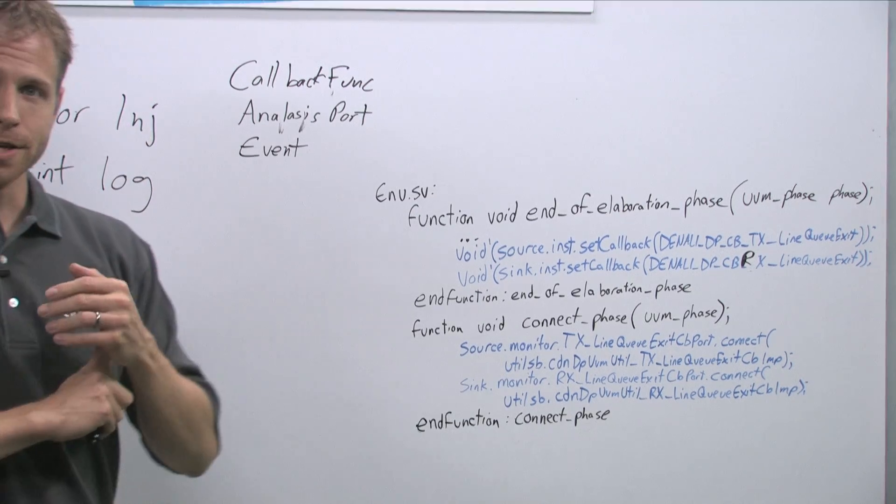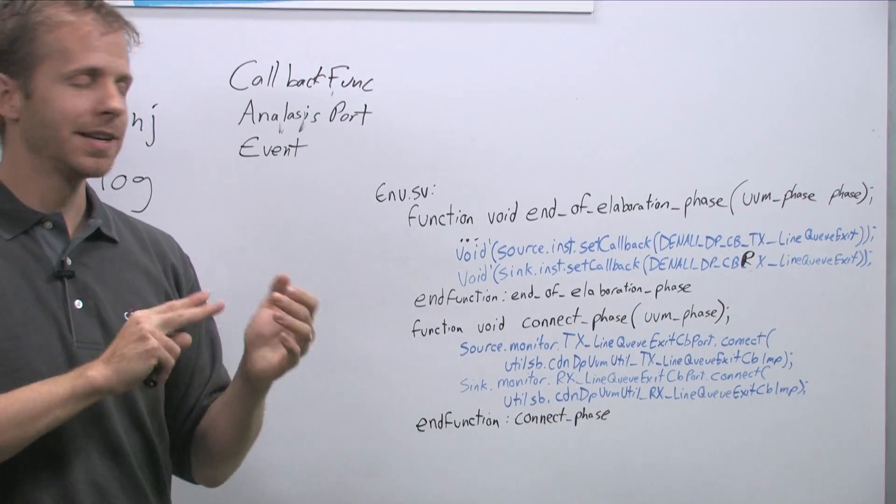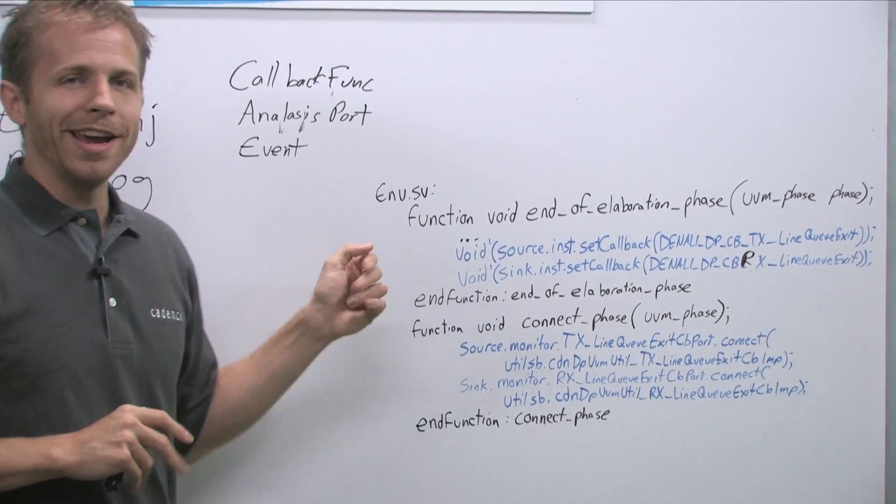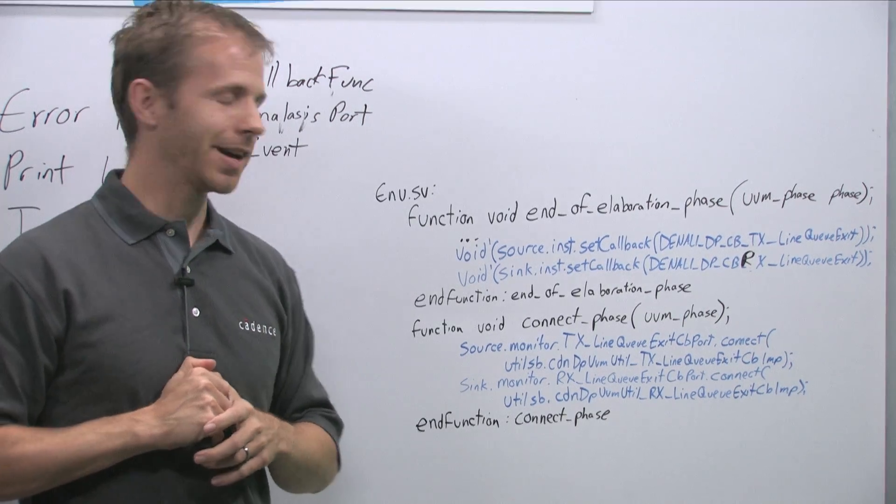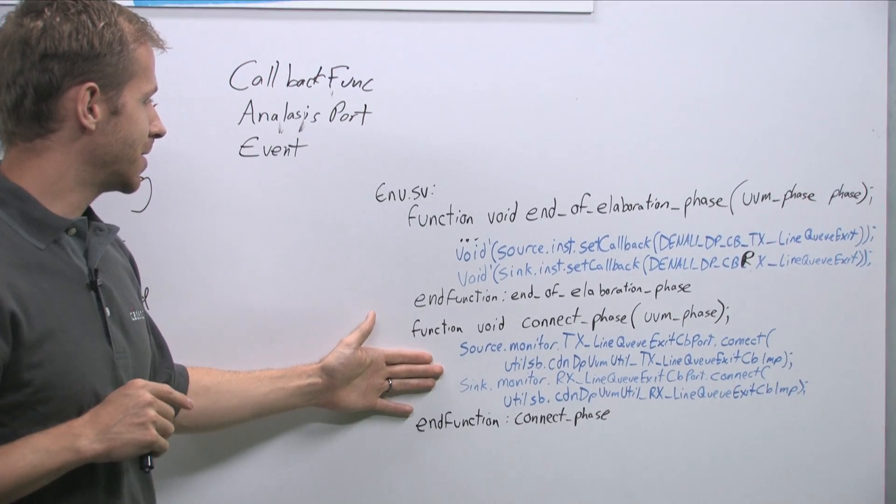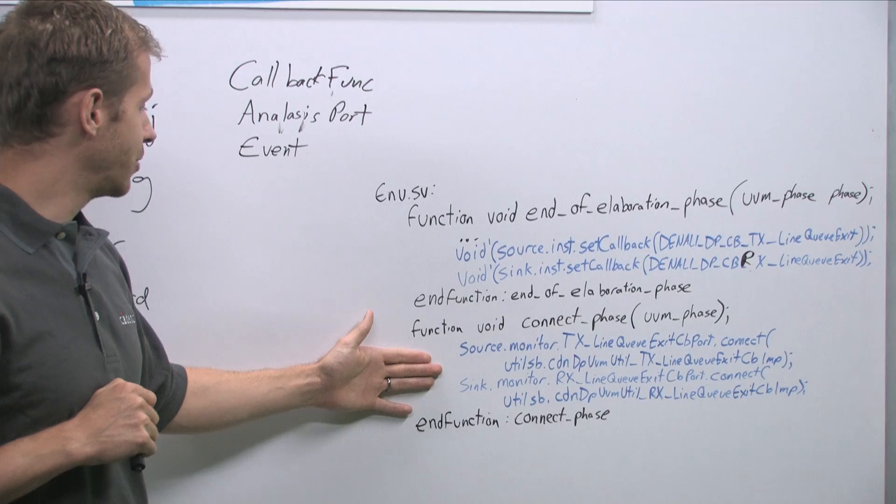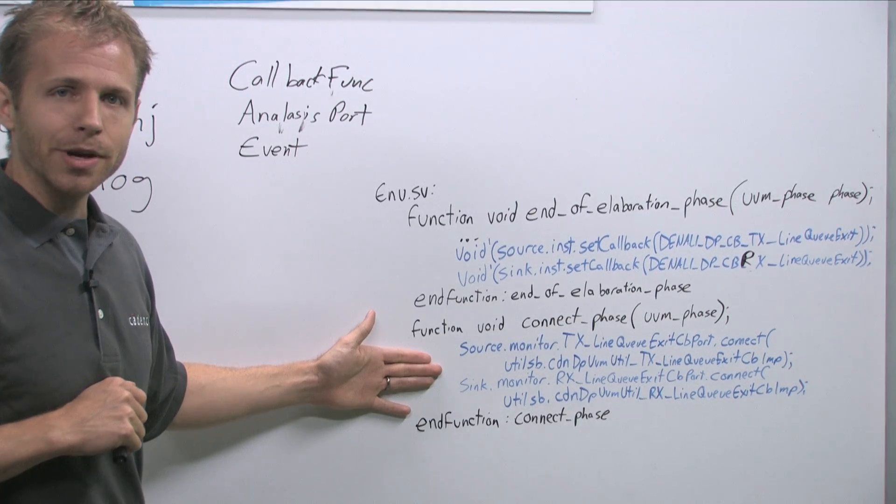So that's the first step is create the UVM scoreboard class. Second one is enable the callbacks. And now we need to actually connect them up together. And that's what this section of code is. And again, you can find it at the example location I showed below.